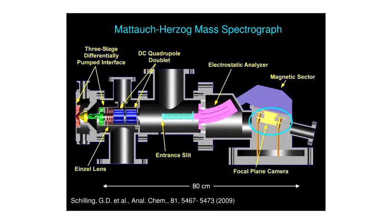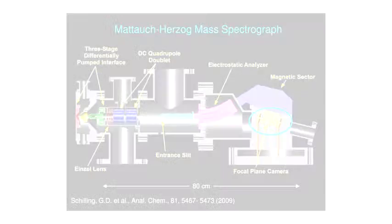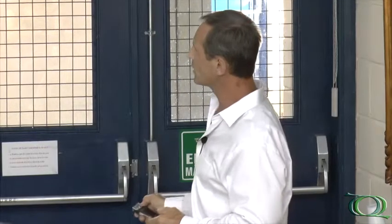Across the mass spectrum from left to right is the focal plane. Typically one would arrange a series of electronic detectors here, or 40 years ago you'd have a photographic plate. What is truly evolutionary about Gary's design is the use of a focal plane camera.